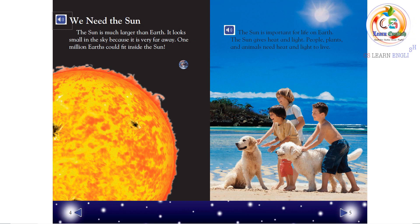We need the Sun. The Sun is much larger than Earth. It looks small in the sky because it is very far away. One million Earths could fit inside the Sun. The Sun is important for life on Earth. The Sun gives heat and light. People, plants, and animals need heat and light to live.